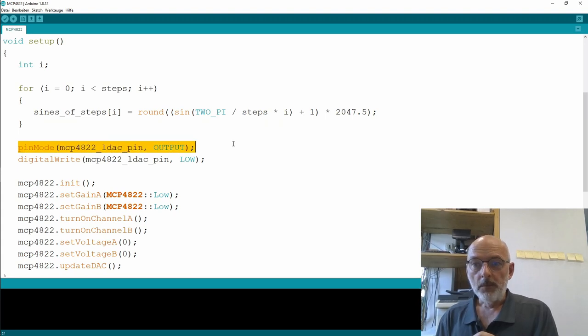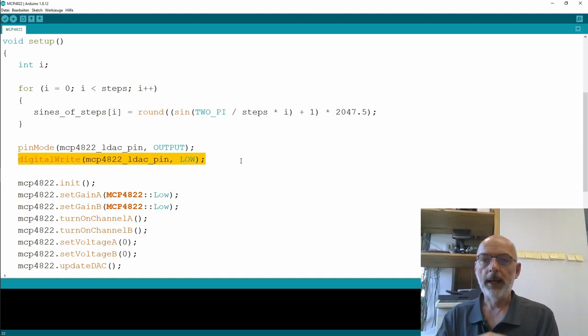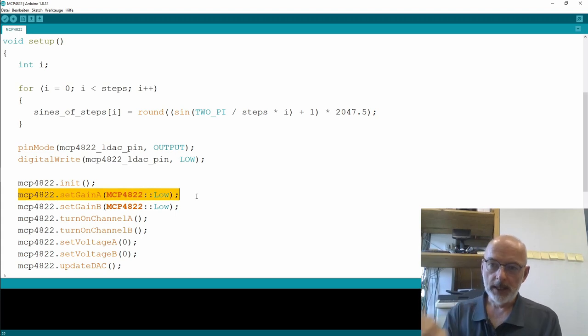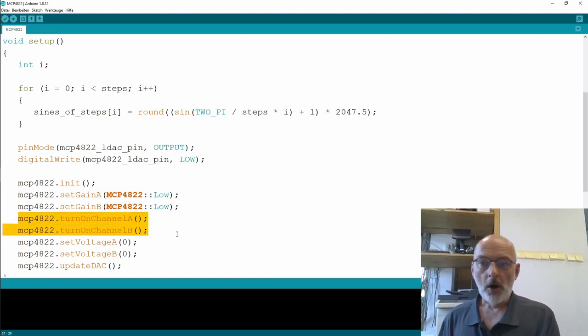I set the pin mode for my load DAC pin to output and I write low to it. And I will leave it at low, at least in the context of that video. More maybe in the second part. Now on to the MCP48XX library or my object here, MCP4822. You have to initialize it. You can, of course, set the gain for both channels. Remember, gain 1 or gain 2. You can turn on or off the channels. Of course, here I'm turning them on.